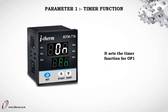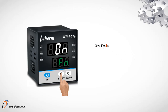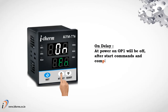Parameter 1: Timer Function. It sets the timer function for Output 1. On Delay: at power on, Output 1 will be off. After start command and completion of the time delay, Output 1 will turn on.